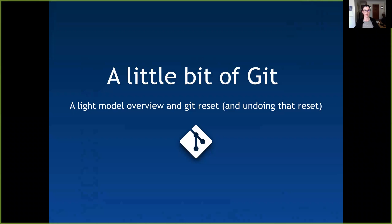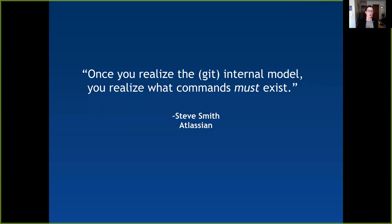Today we're going to talk about a low-level model overview of Git as well as the command git reset and what that looks like within that model. I like this quote from Steve Smith at Atlassian: 'Once you realize the Git internal model, you realize what commands must exist.' As soon as I got more comfortable with how Git worked at the base level, I was more confident using a lot of the commands.